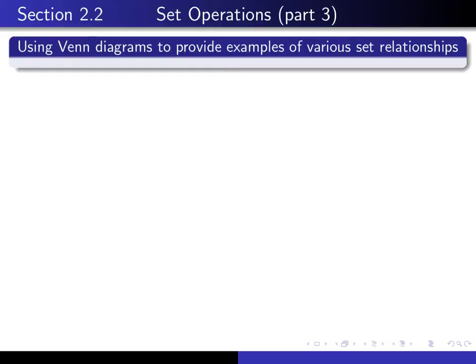This is part 3 in our series of lectures on section 2.2, and in this lecture we're going to make use of Venn diagrams to suggest to us how to construct examples of various set relationships.